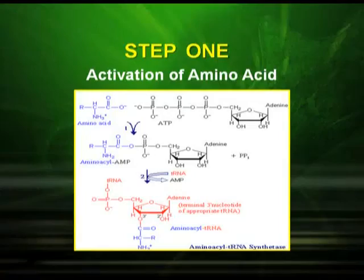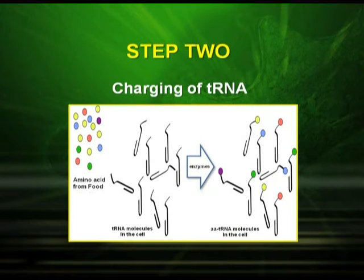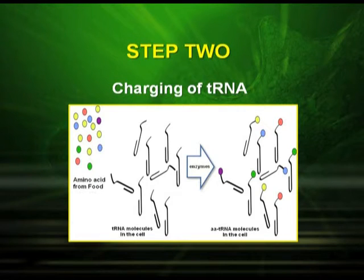Step one is activation of amino acids. The amino acids are activated by reacting with ATP — the source of energy here is ATP — and that is how it forms amino acid AMP. In step two, charging of tRNA takes place. The tRNA reacts with ATP and gets charged. The amino acids, already activated by ATP, bind to the tRNA, and that is how the tRNAs are charged.